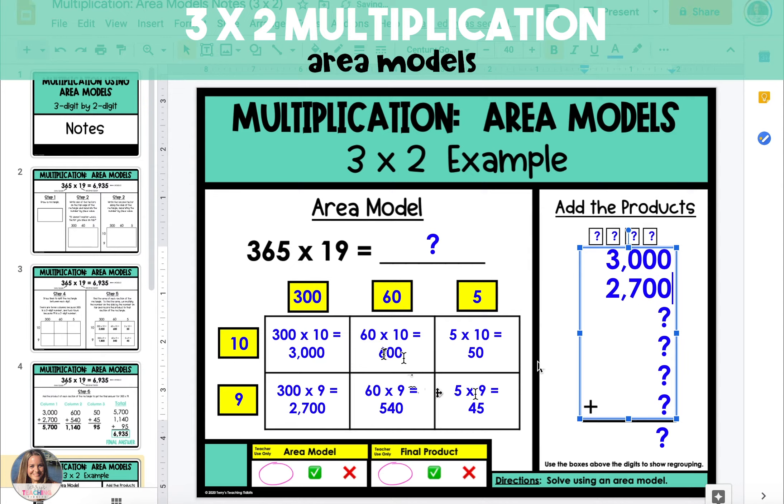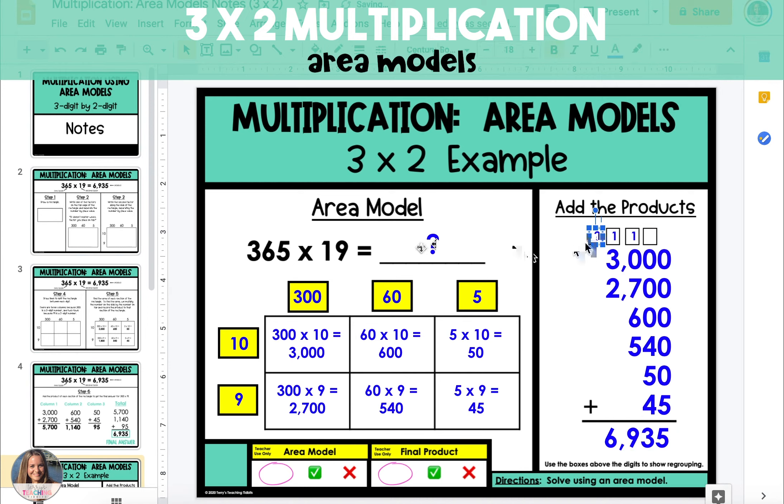And the final step is to take the area of each section and add them all together to get the final product. So 365 times 19 is 6,935.